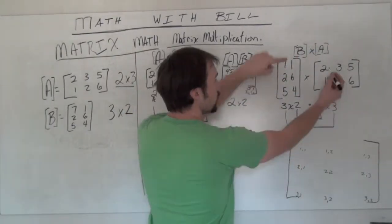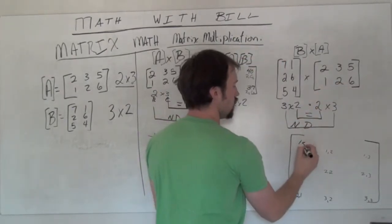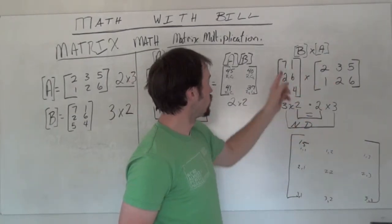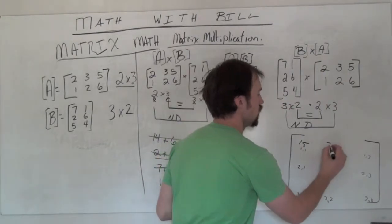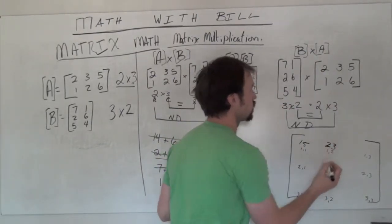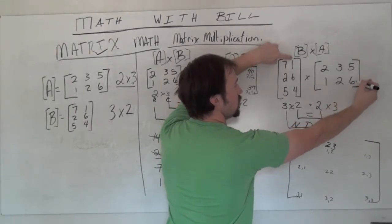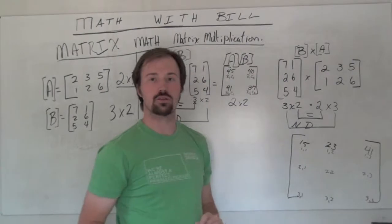So with my 1-1, I take 7 times 2, which is 14, plus 1 times 1, first entry here is 15. Next up, 1-2, 7 times 3 is 21, plus 2 more, so we get 23. 7 times 5 is 35, plus 6 more gives me a 41 in my 1-3 position.